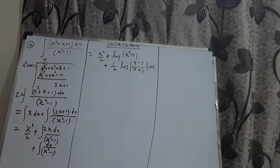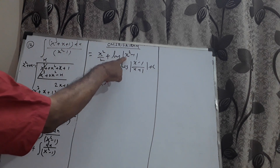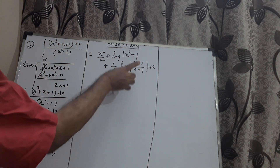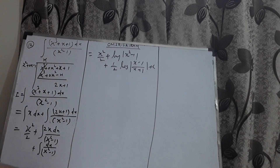If you check your textbook, the answer may look different because it uses partial fractions. Using partial fractions, log|x² - 1| expands as log|x - 1| + log|x + 1|, so grouping gives (3/2) log|x - 1| and (1/2) log|x + 1| as the final answer via the partial fraction method.